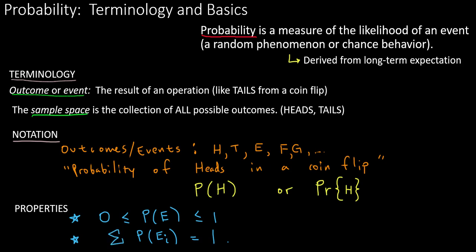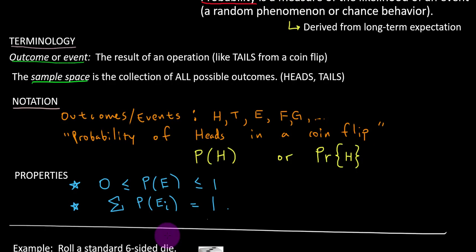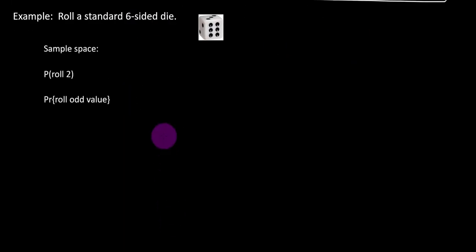Let's look at an example to put this terminology into context. Next, I've got a standard six-sided die imaged here. And let's suppose that you roll that die once. What is the sample space? Well, the sample space is all possible outcomes. And while we know that you could roll a one, you could roll a two, or a three, four, five, or six. Those are all the possible outcomes.